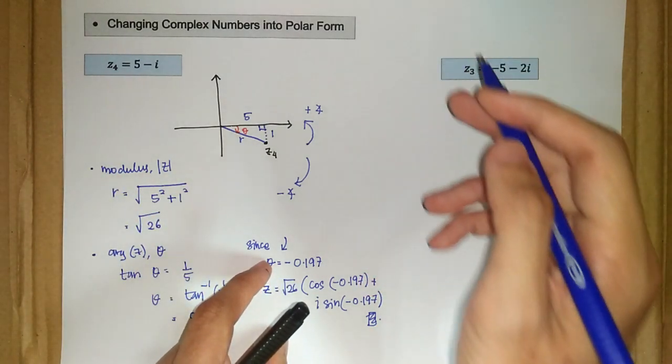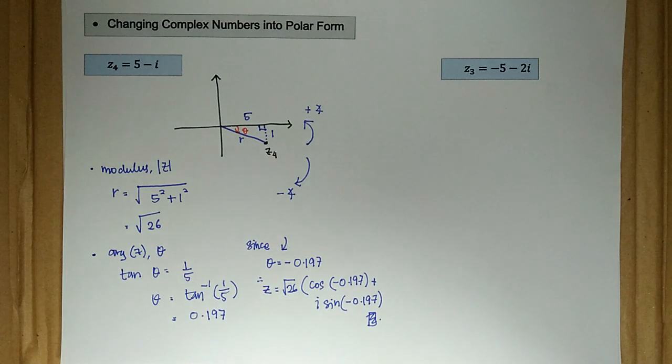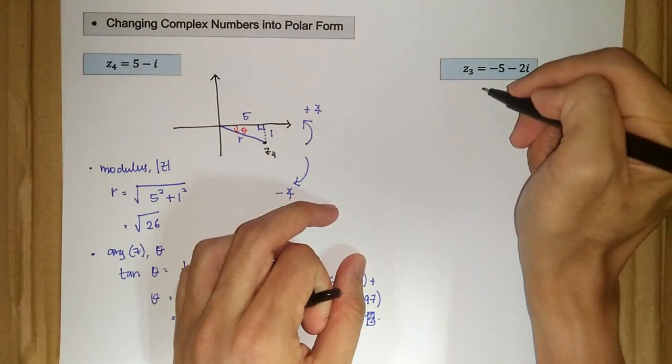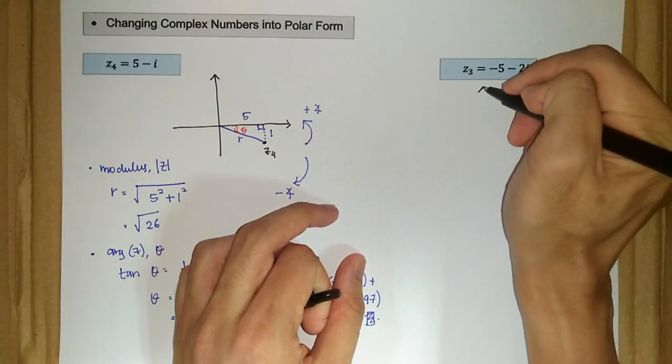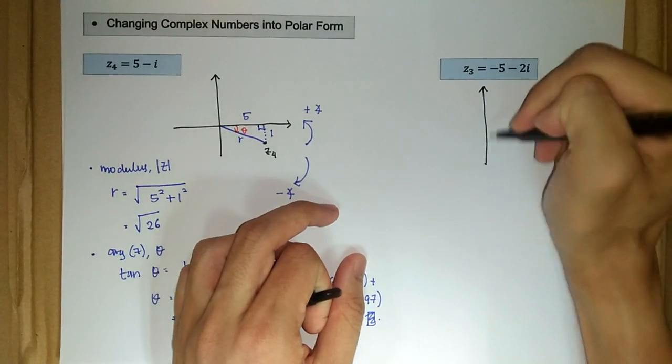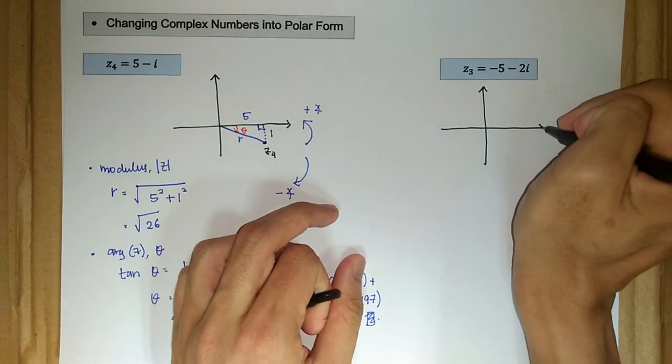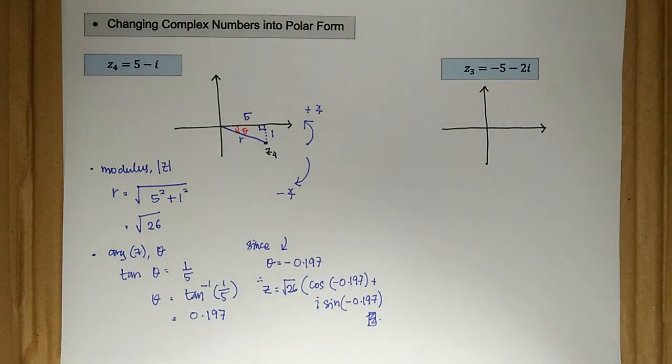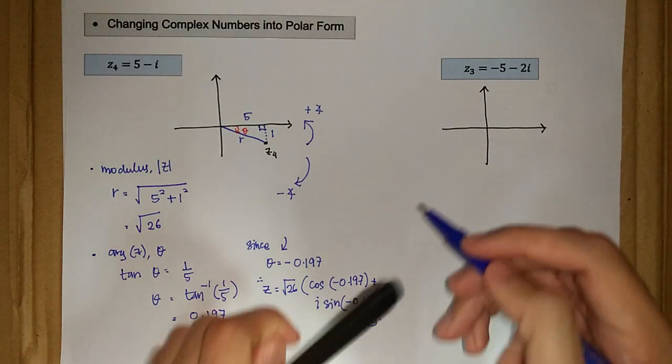What about the second one? z₃ is equal to negative 5 minus 2i. Again, the first step is we want to plot our point here, our number here in our Argand diagram. So we have negative 5, negative 2, so it must be in the third quadrant.